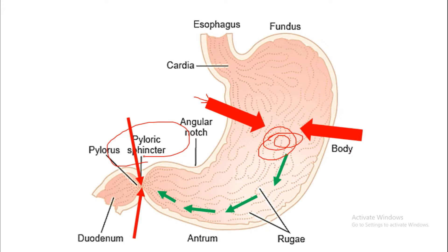The pyloric sphincter contracts strongly and the pylorus is already closed, so the food cannot enter the duodenum. The food reverts back towards the body of the stomach. This happens many times, mixing the food with all the gastric contents as well as HCl. This event is known as retropulsion.